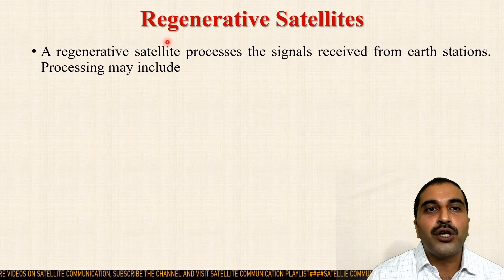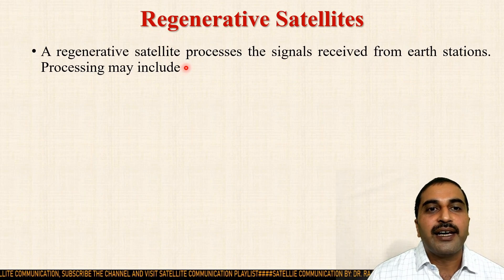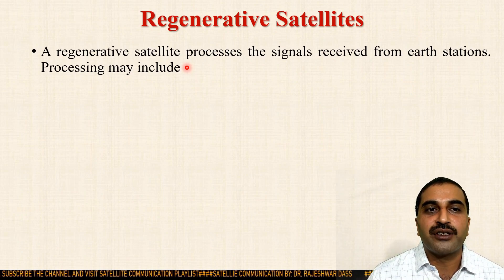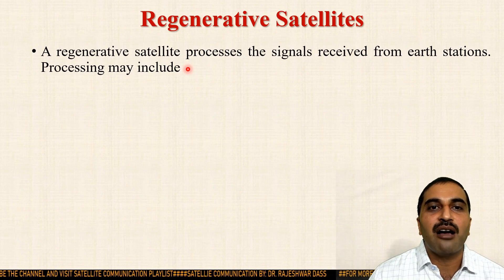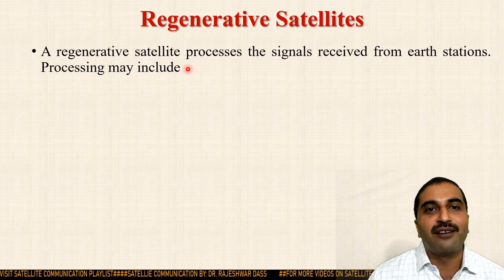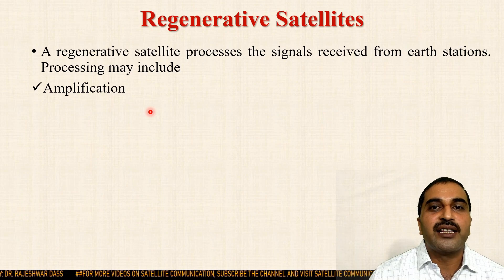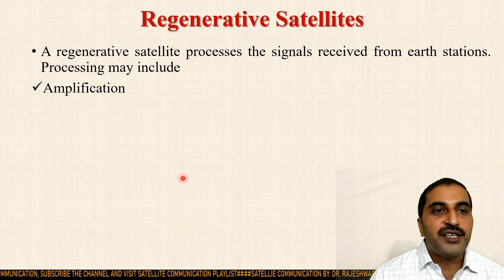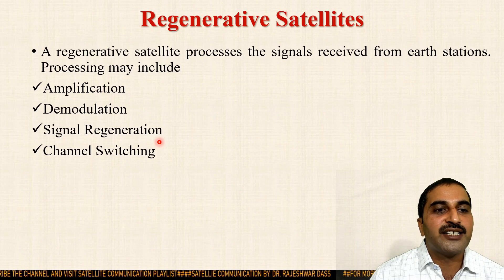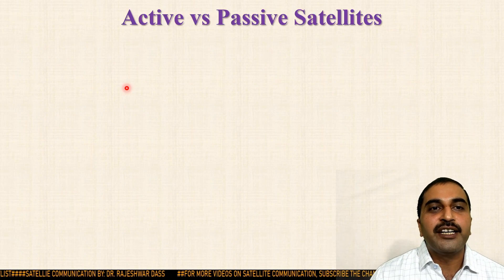Next are regenerative satellites. Active satellites have processing units, but when the signal is transmitted from the ground Earth station, errors in the information can increase. Regenerative satellites also have processing units and are the advanced version of active satellites. Regenerative satellites can amplify the signals, demodulate the signals, perform signal regeneration, and also support channel switching and remodulation.